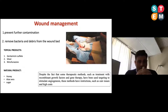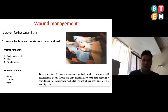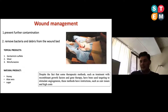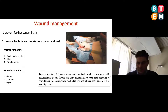The second step is to remove bacteria and debris and clean the wound bed. In this step, natural products such as honey, aloe vera, and sugar are very commonly used. Additionally, some therapeutic methods such as treatment with growth factors and gene therapy have been used to target and stimulate angiogenesis, but these methods carry very important restrictions such as risks and high costs.